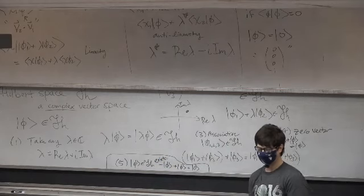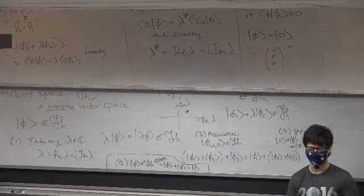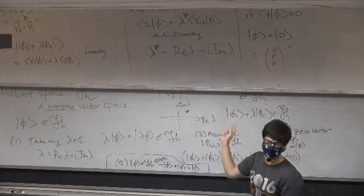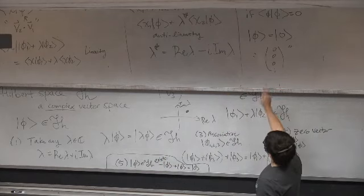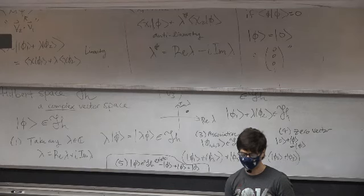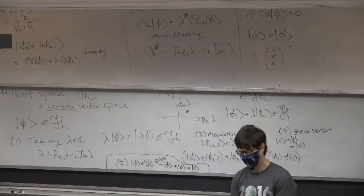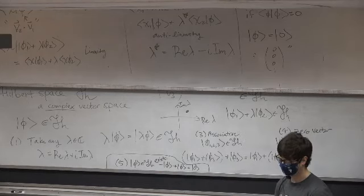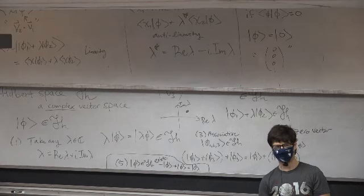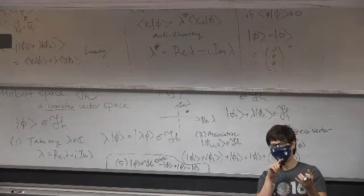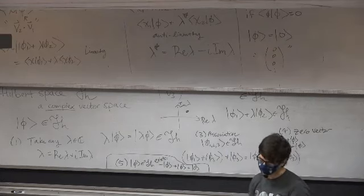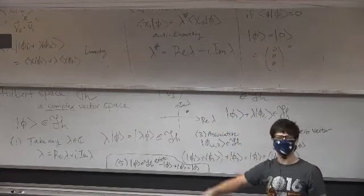So those are the kind of properties. You have this inner product that takes pairs of vectors and connects them to a complex number, with these properties of linearity and anti-linearity. Now we're going to talk about basis decomposition. This is a vector space, so we can find a basis for the space. Any questions about the general scheme of the space — just like regular vectors, except they have complex entries, and there's also this inner product, which is kind of like a complex generalization of the dot product between vectors, but not quite, because of this weird linearity and anti-linearity business.